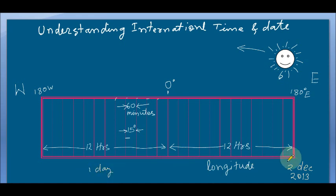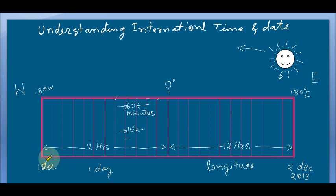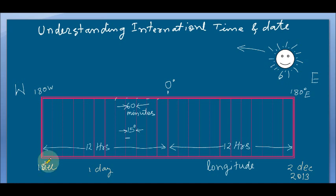If there is 22nd December on one side, then it will be 21st December — or say the 1st — on the other side, because that point lags behind. The Sun comes to one place first, and after 24 hours it comes to the next place. So one side is one full day behind.